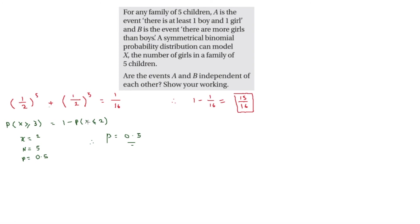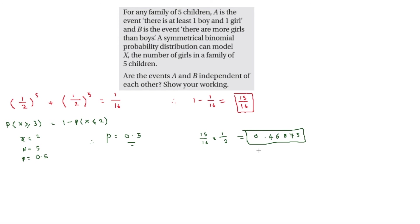To test independence, we compute P(A) × P(B) = 15/16 × 0.5 = 0.46875. If A and B are independent, then P(A) × P(B) should equal P(A ∩ B), so we now need to compare this to a direct calculation of P(A ∩ B).